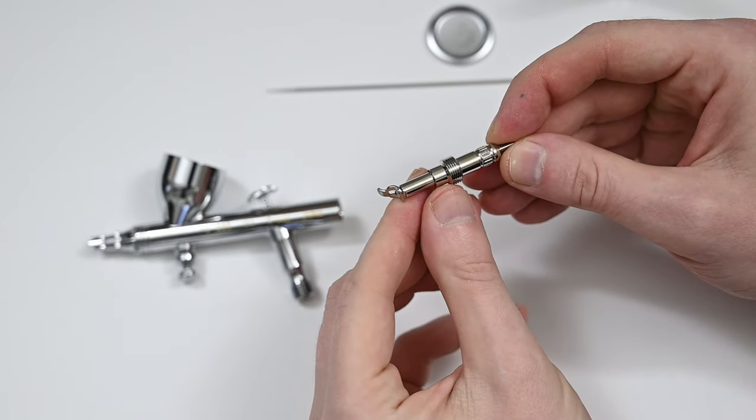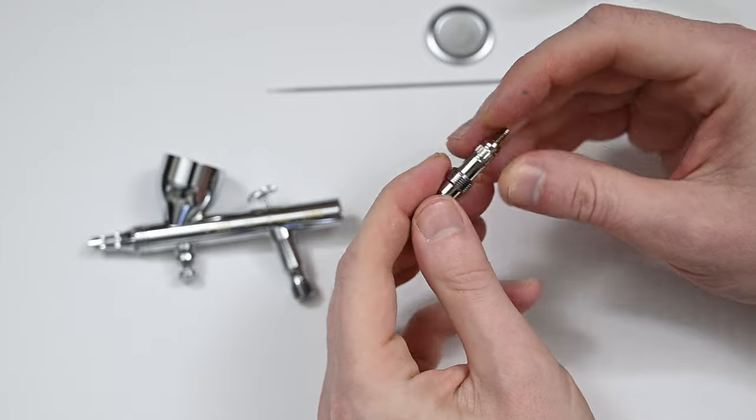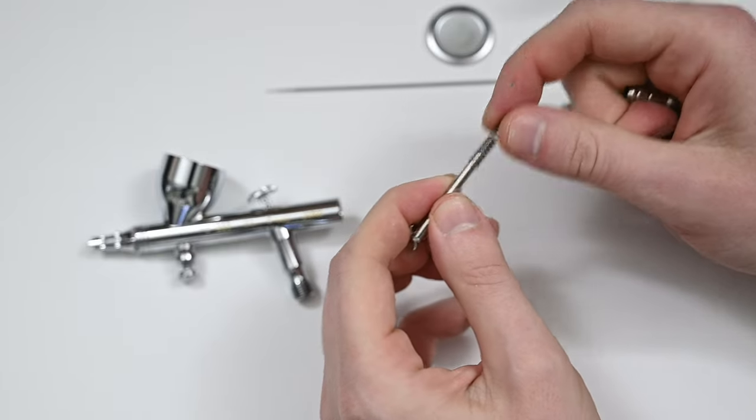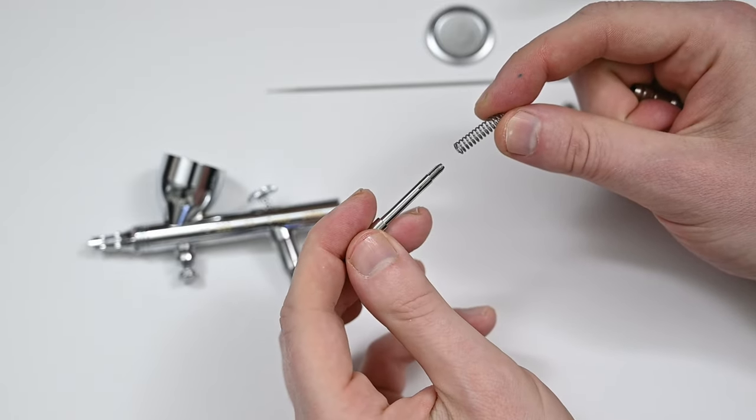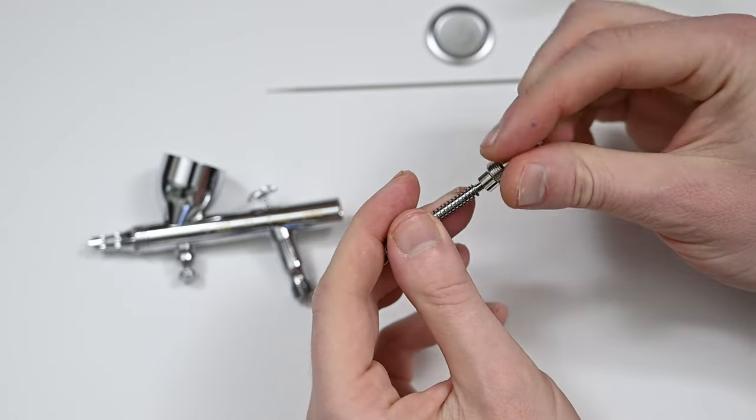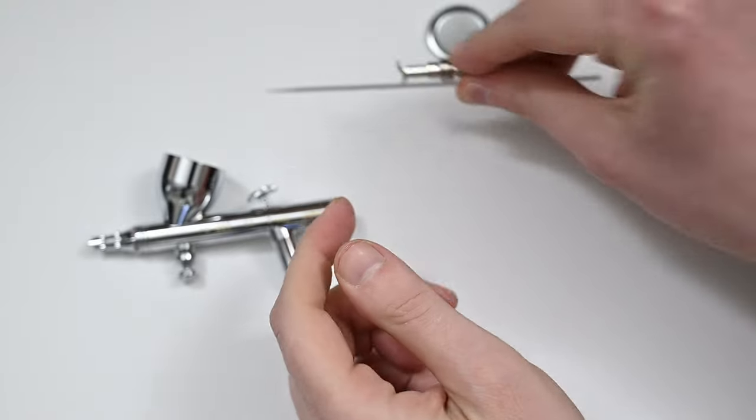This first part is the needle guide, and what I love to see is that the trigger lever is connected to this, so really easy to break down. And then inside is the spring itself, so super easy to break down. If you own an Iwata, you'll be very familiar with this, because it's pretty much identical.